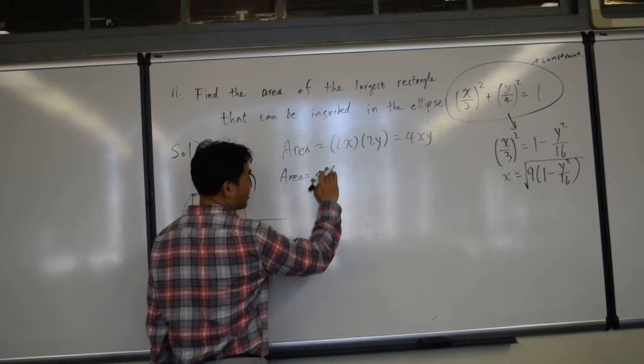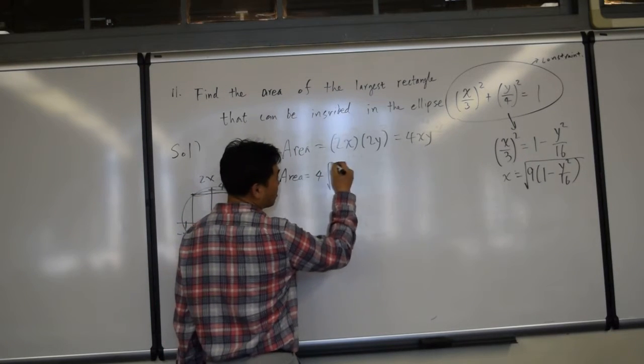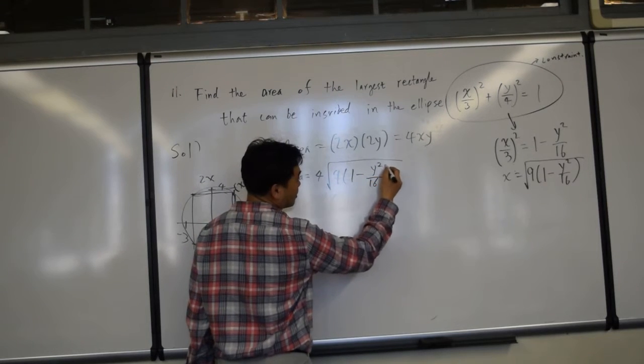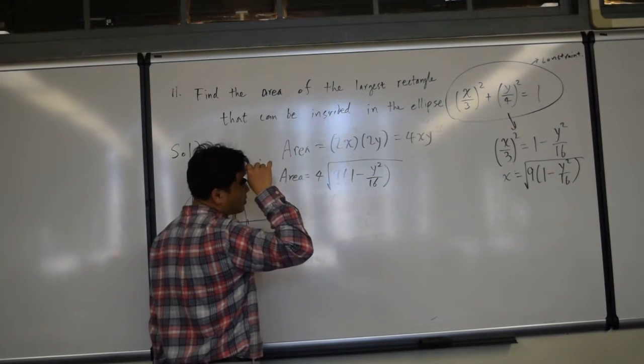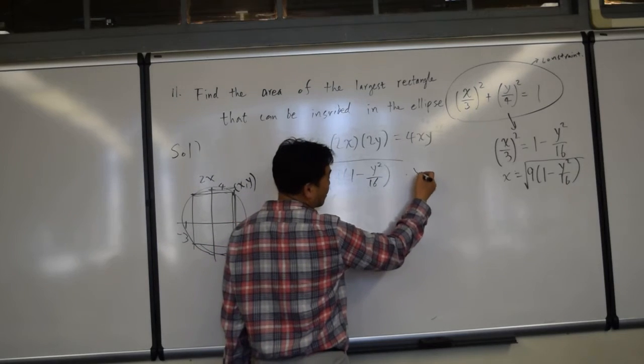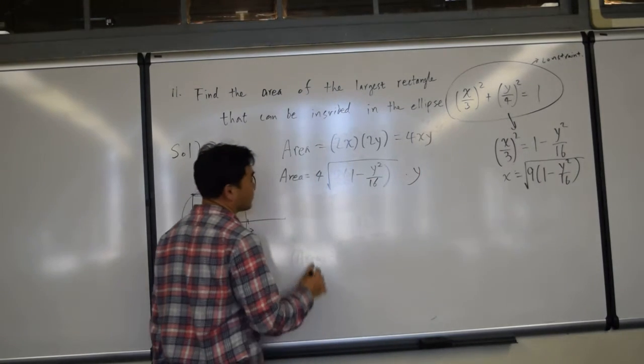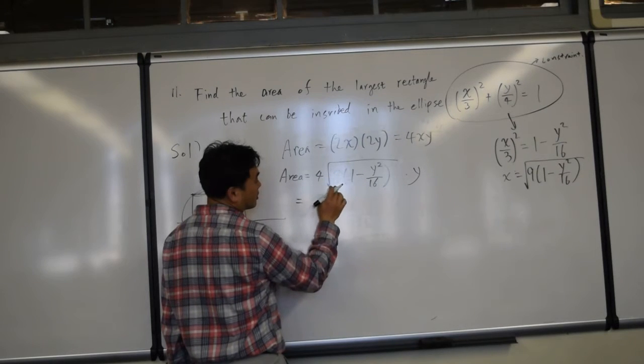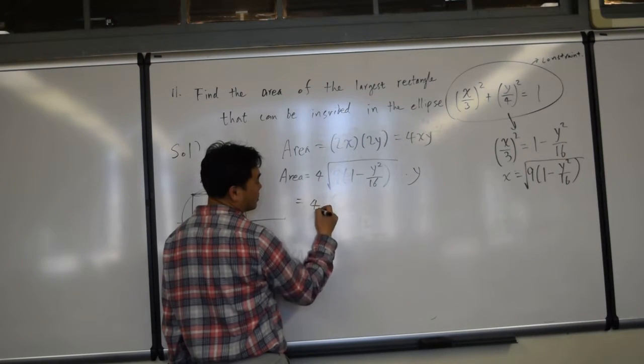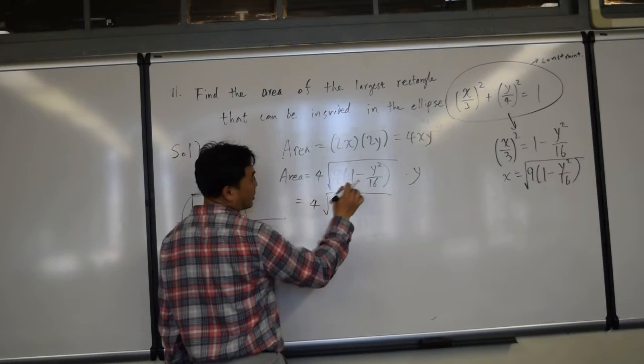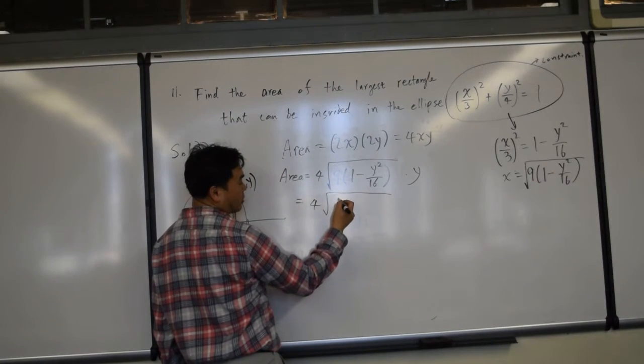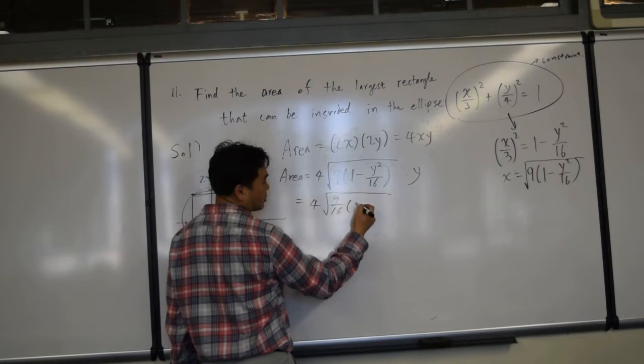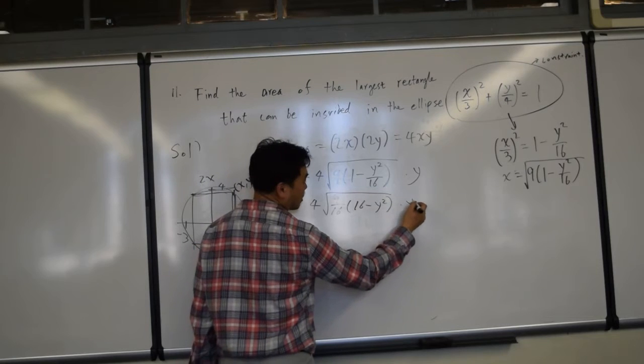So this x can now be replaced by square root of 9 times 1 minus y squared over 16, and then you can multiply by y. And 3... so this is a 4. I can pull a 16 out and make it as 9 over 16, and 16 minus y squared times y.